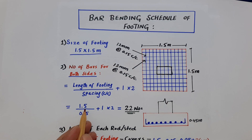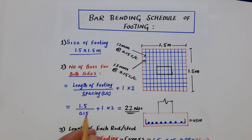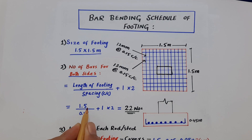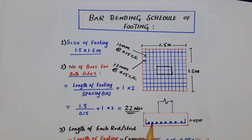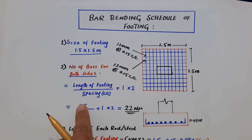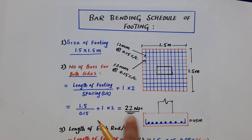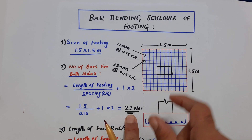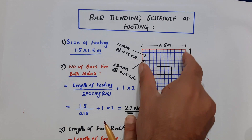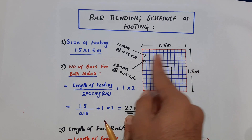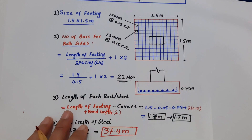So: 1.5 meters divided by 0.15 meters spacing, plus 1, multiplied by 2. That gives us 1.5 ÷ 0.15 = 10, plus 1 = 11, times 2 = 22 steel rods. We require 22 steel rods for this footing, for both main bars and distribution bars.